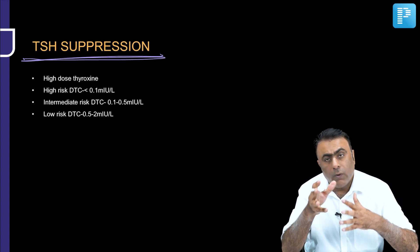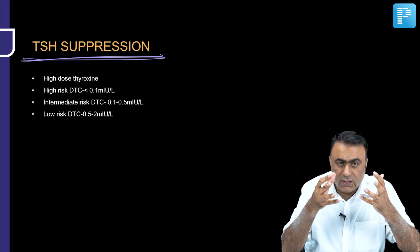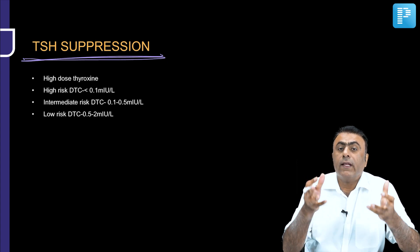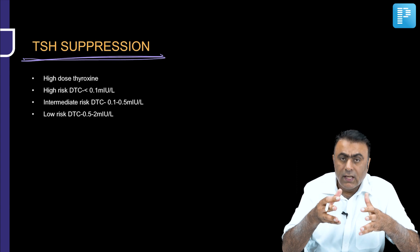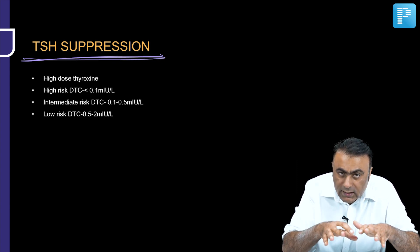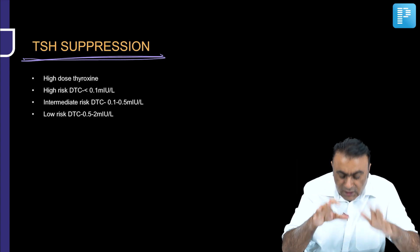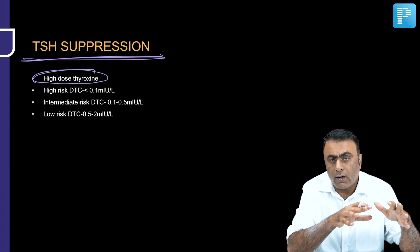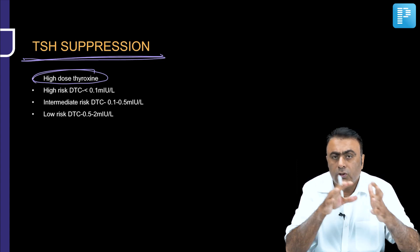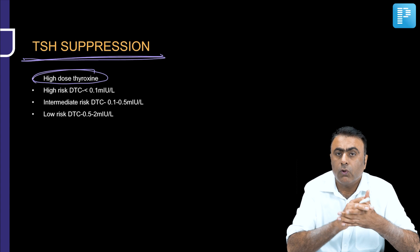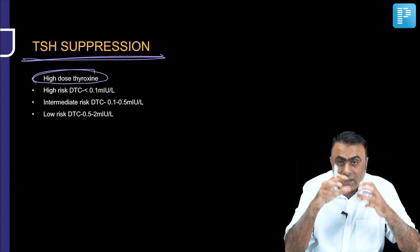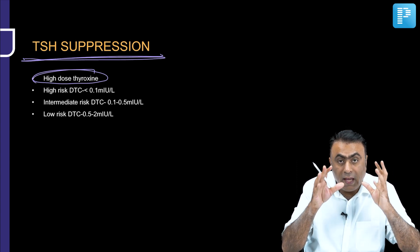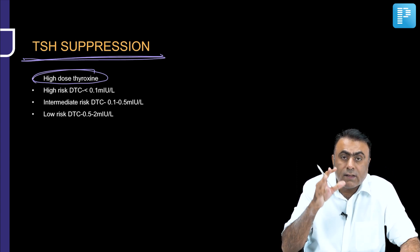The third component of treatment for thyroid cancer is TSH suppression. These differentiated thyroid cancers grow under the influence of TSH, so to prevent growth, recurrences, and metastases, we have to suppress TSH by giving high-dose thyroxine. High-dose thyroxine will suppress TSH and also replace thyroid hormone after total thyroidectomy. The degree of suppression varies depending on the risk of recurrence.